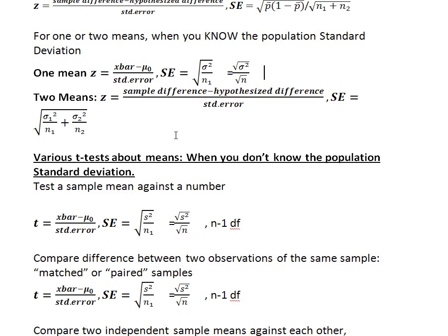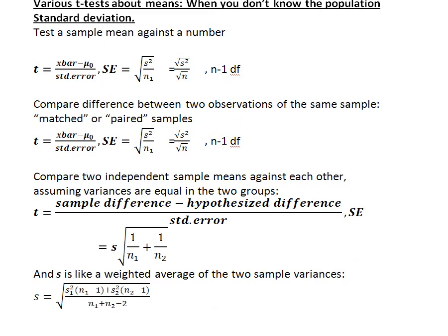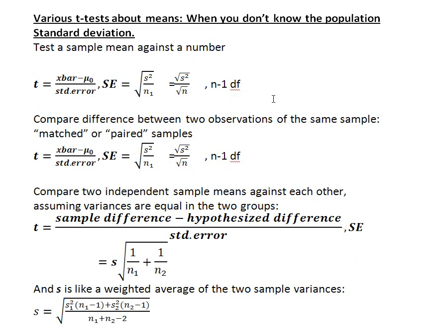You can only use a z-test for means when you assume you know the population standard deviation. Usually you don't, so we have to use a t-test instead. The t-distribution was created by Student — also known as William Gossett — for situations when you don't know the population standard deviation. Since I'm at the 10-minute mark, I'm going to end this video here and pick up with t-tests in the next section.